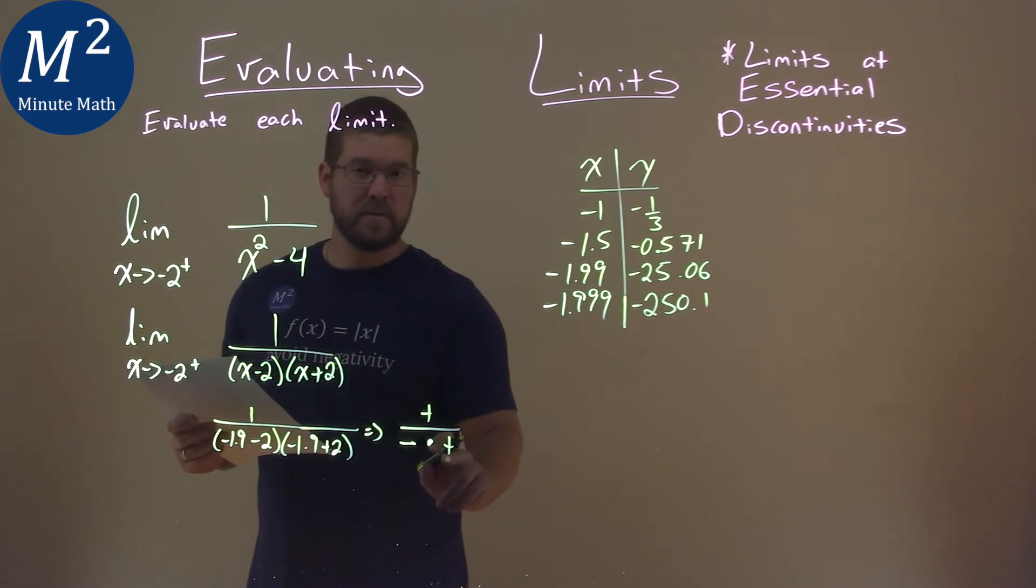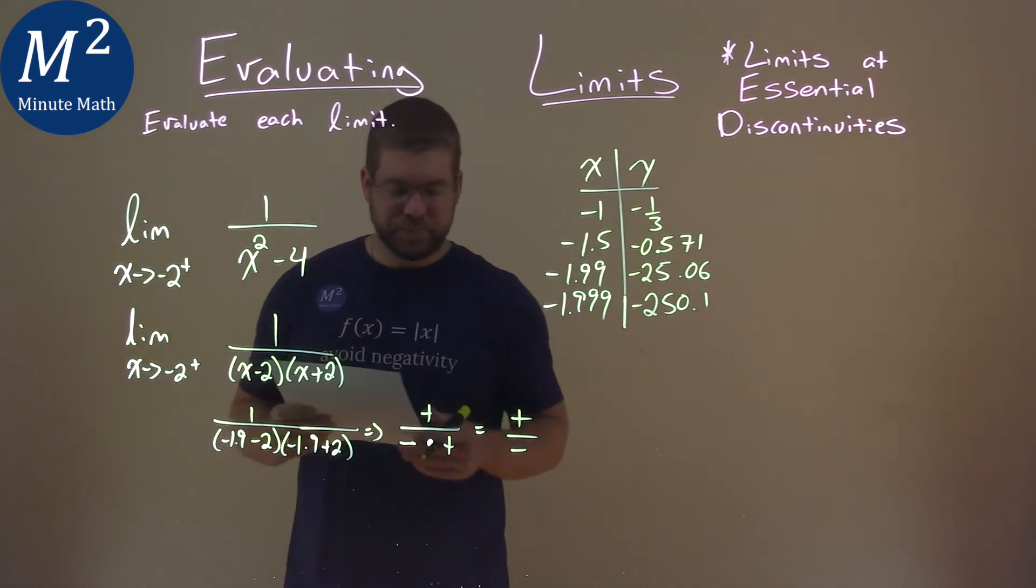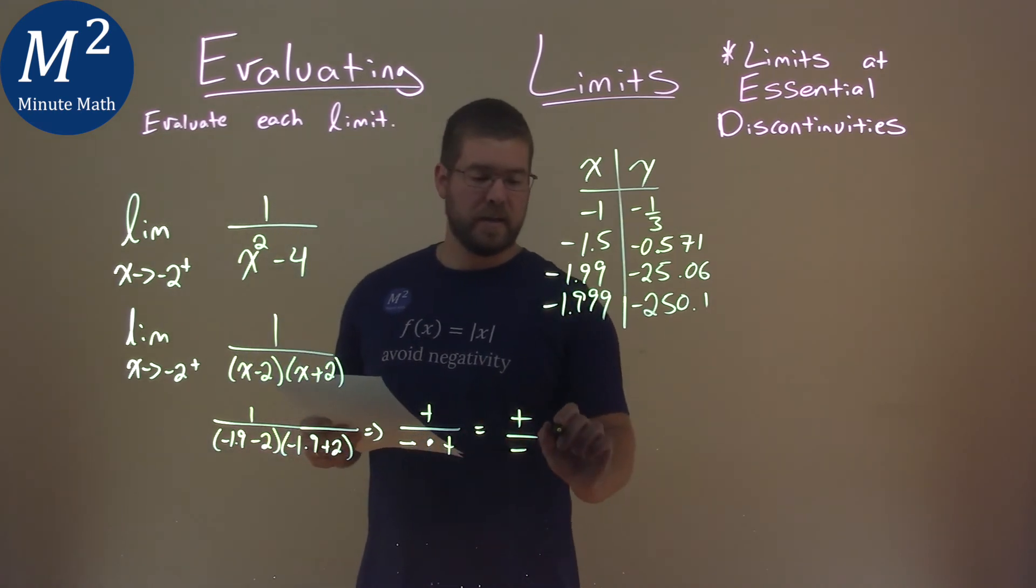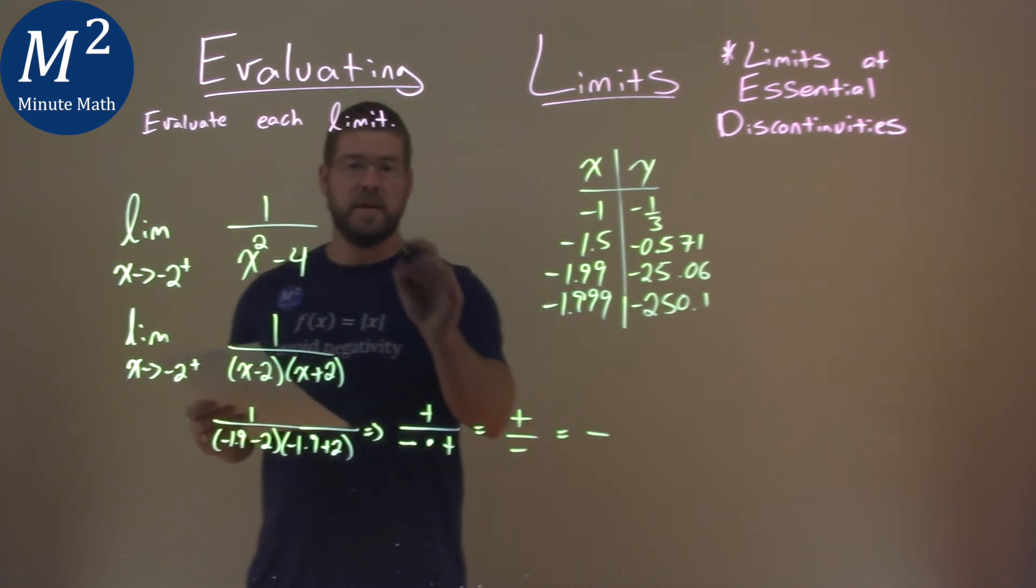Negative times a positive is a negative. So, we have positive over a negative here. And a positive divided by a negative is a negative.